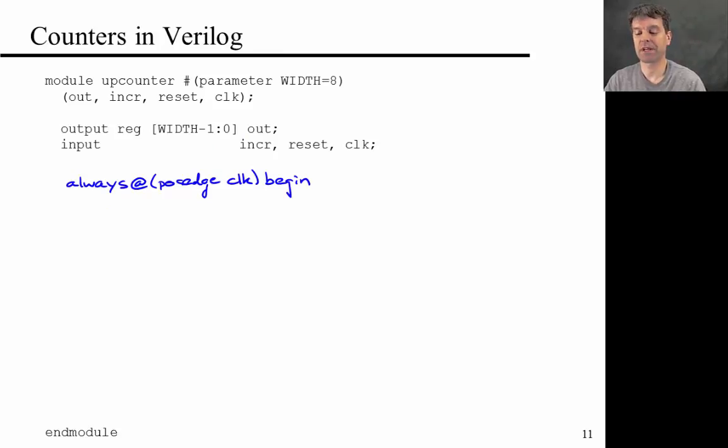Let's briefly think about how you can describe counters in Verilog. This is a module that's called upCounter. It has a parameter width, which here is set to 8. Out is an output. It's a register of width, of size widths, essentially. Then increment, reset, and clock are inputs. What I want to do is say always at positive edge clock. That's when something happens, begin.